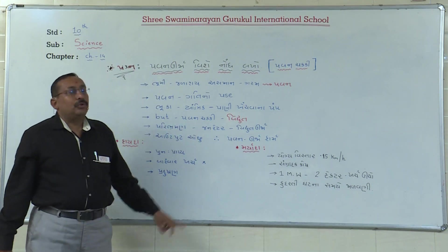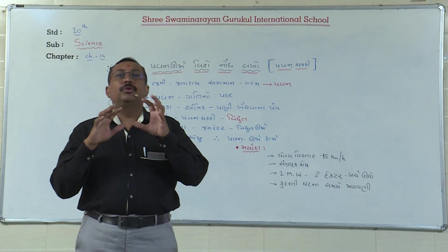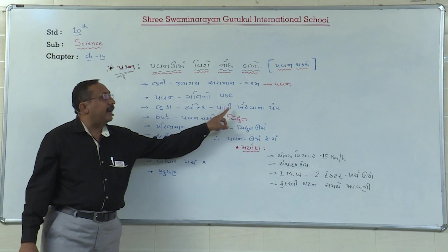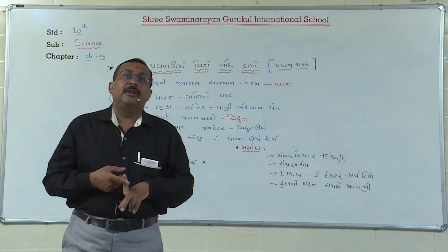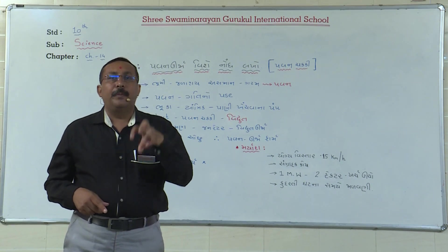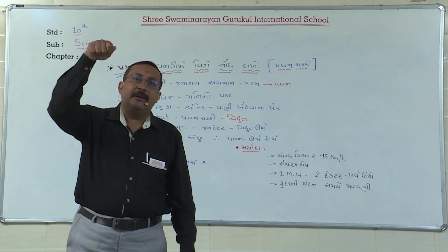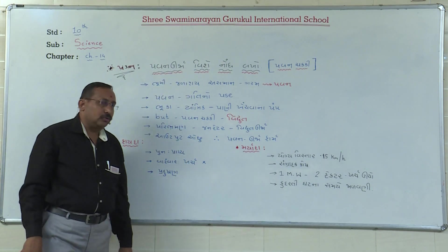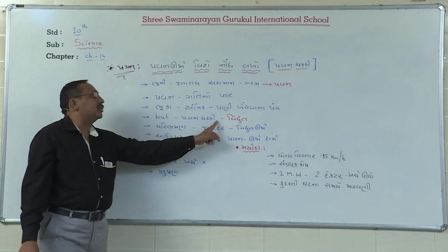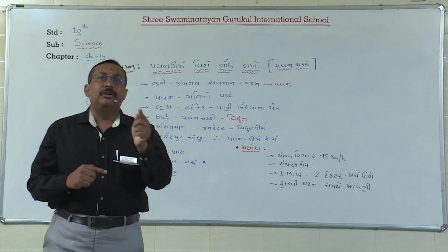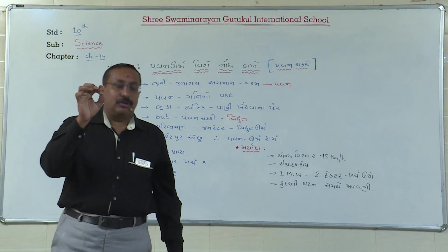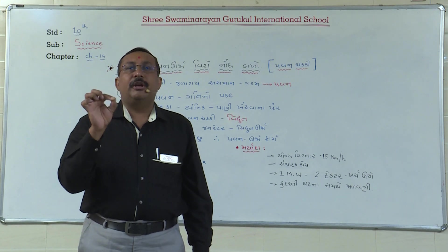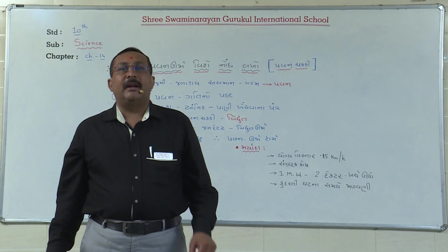ભૂતકાળમાં પવન ચક્કી હતી, પરંતુ તે ચક્કીનો ઉપયોગ માત્ર યાંત્રિક ઉર્જા માટે, એટલે કે પાણી ખેંચવાના પંપ તરીકે થતો. 20-25 વર્ષ પહેલા, ડ્રમ્ (ડંકી)ની મદદથી જેમ પાણી ખેંચીએ છીએ, એ જ રીતે પવન ચક્કીની મદદ વડે પાણી ખેંચવા માટે ઉપયોગ કરવામાં આવતો. હાલમાં આ પવન ચક્કીનો ઉપયોગ વિદ્યુત ઉત્પાદન માટે થઈ રહ્યો છે.